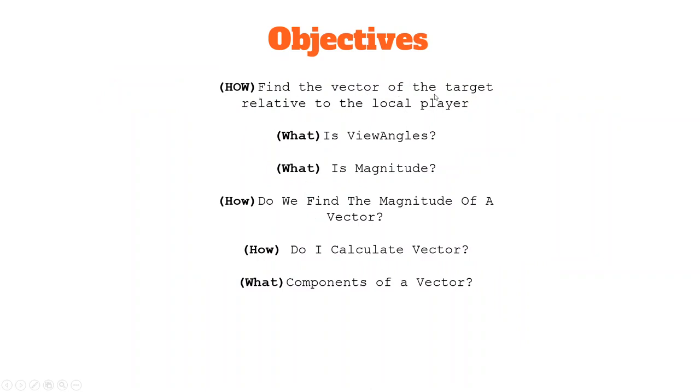We're going to learn how to find the vector of the target relative to the local player, what is view angles, what is magnitude, how do we find the magnitude of a vector, how do I calculate vector, and what are the components of a vector.